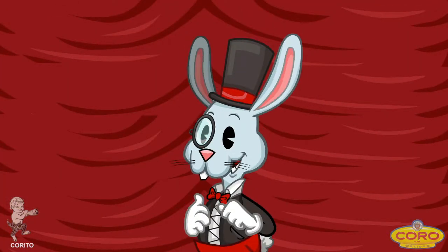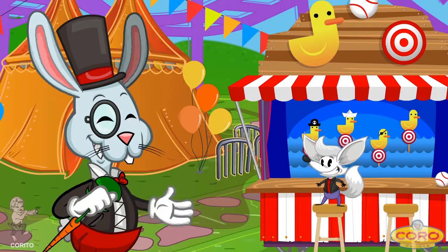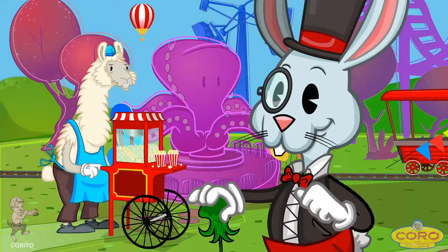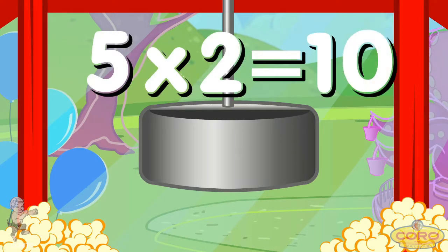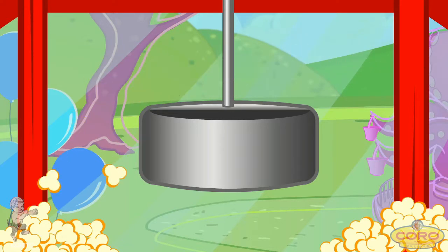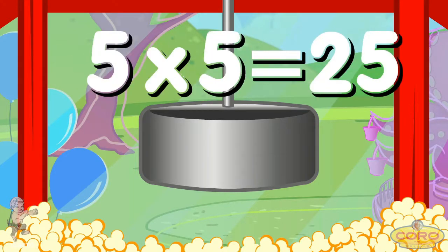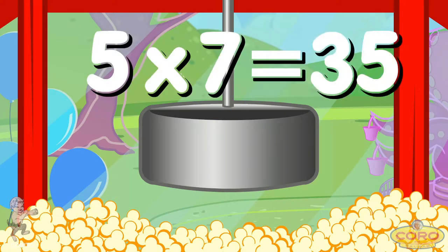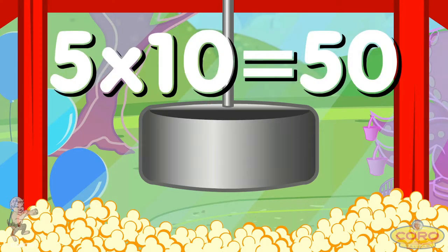Here we go, friends. We're about to sing the table of five. Ready? Start the music. Five times one is five. Five times two is ten. Five times three is fifteen. Five times four is twenty. Five times five, twenty-five. Five times six is thirty. Five times seven, thirty-five. Five times eight is forty. Five times nine, forty-five. Five times ten is fifty.